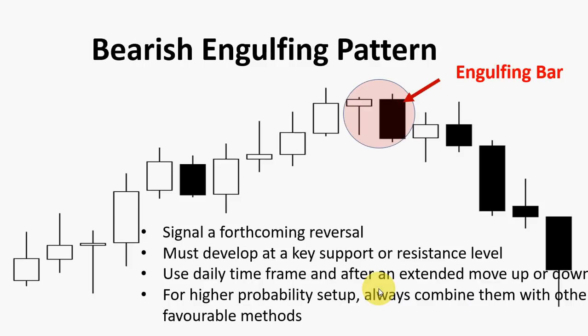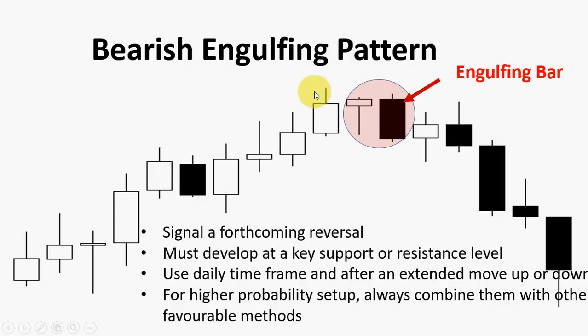And last but not least, this is the bearish engulfing candle. We have a significant up move and then we have this bearish engulfing candle here — the low of this candle is lower than the previous one and the high of this engulfing bar is higher than the previous one. We see the bulls, which were in charge, have been stopped and the bears are now in charge. So this is a significant reversal. It must also be developed at a significant resistance level — if found at a resistance level, that is a strong signal. Use a higher time frame, like the daily time frame. For higher probability, you need more confluences: moving average support, support levels, pivot points, and Fibonacci levels.